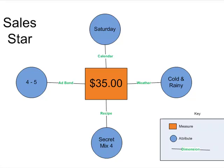In the middle of this star, in the orange box, is our sales fact: the number thirty-five dollars. That's a good fact—we made thirty-five dollars is what that means. And on the dimensions surrounding that fact in the blue circles, you see the dimension attributes. So I know something about that fact.